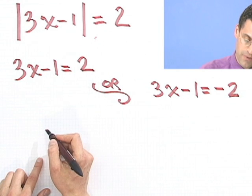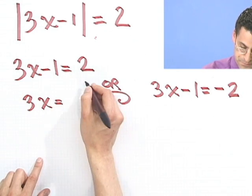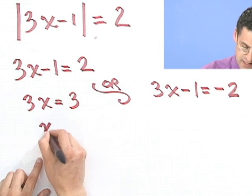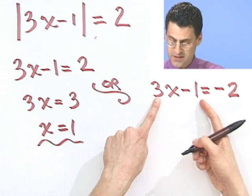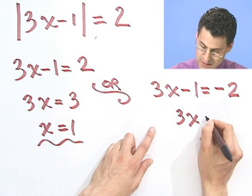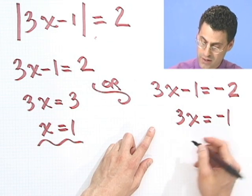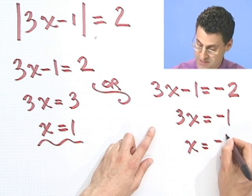So I bring the minus 1 over. I see 3x equals 3. And so x has to equal 1. So there's one answer. If I bring this over here, the minus 1 comes over as a plus 1. I see 3x equals minus 1. I take minus 2 and I add 1. And so therefore, x equals minus 1 third.